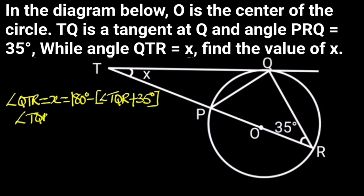But angle TQR equals angle TQP plus angle PQR. Angle TQP equals 35 degrees. Reason: Angle in alternate segment.